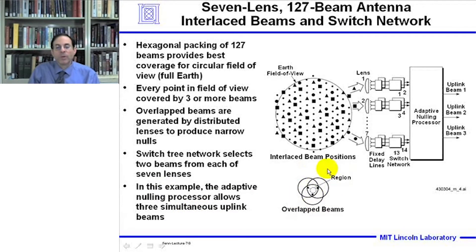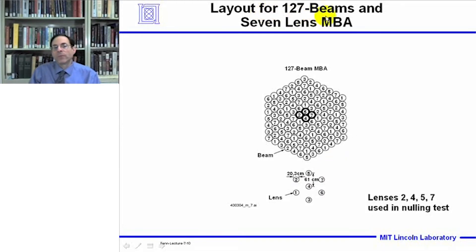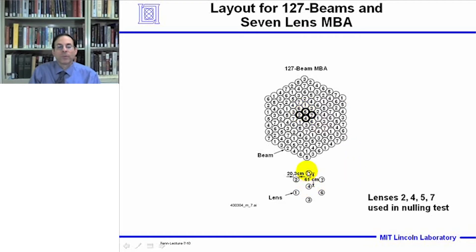In any given region, three beams cover the area. Here's the layout for the 127 beams in the seven-lens MBA system, with lenses labeled one through seven and beams arranged in a hexagonal lattice. In the nulling tests, lenses two, four, seven, and five are used. The lenses are separated by 61 centimeters and each lens is about 20 centimeters in diameter.